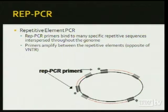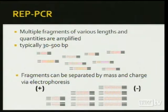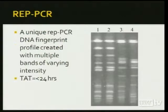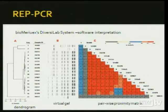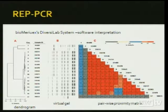REP-PCR, or repetitive element PCR, is a technique you may not have heard about. Either general conserved or genus-specific primers bind to repetitive sequences interspersed throughout the genome, generating multiple fragments of various lengths, then separated by mass and charge via electrophoresis. This generates a unique REP-PCR DNA fingerprint with multiple bands of varying intensity. The system has been commercialized as Diversalab, with a turnaround time generally less than 24 hours, using microfluidics and fluorescent signal detection with an Agilent analyzer. Diversalab's software generates a virtual gel from the electropherogram and a dendrogram based on a pairwise proximity matrix.